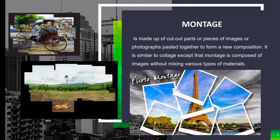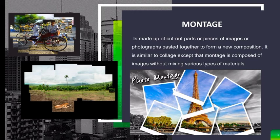Montage uses cut-out parts or pieces of images — for example, if you take pictures from one locality, it is not just one image but numerous pictures from one locality. You then compile them, like using PowerPoint to layer them together, until you form one single image — and that makes the art.